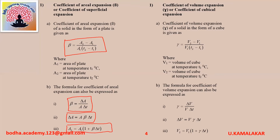Coefficient of volume expansion or coefficient of cubical expansion: the coefficient of volume expansion of a solid in the form of a cube is given as gamma equals (V2 minus V1) divided by (V1 into T2 minus T1), where V1 is volume of cube at temperature T1°C and V2 is volume at T2°C. It can also be expressed as gamma equals delta V divided by (V into delta T), or delta V equals V gamma delta T, or V2 equals V1 into (1 plus gamma into delta T).